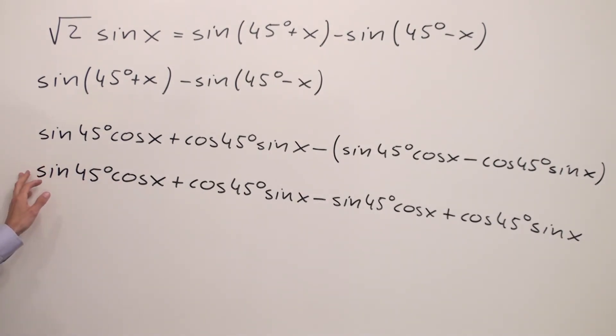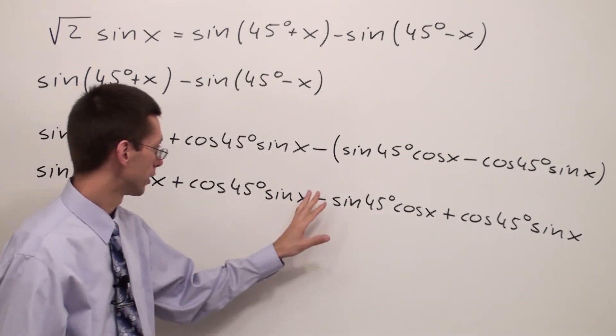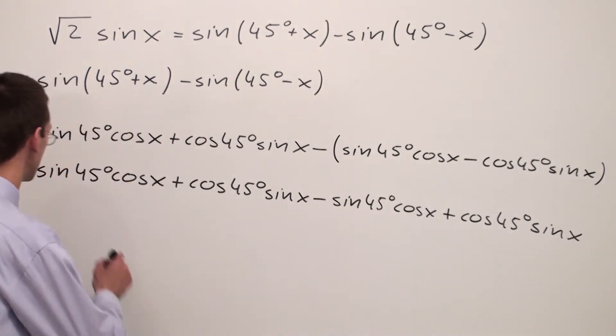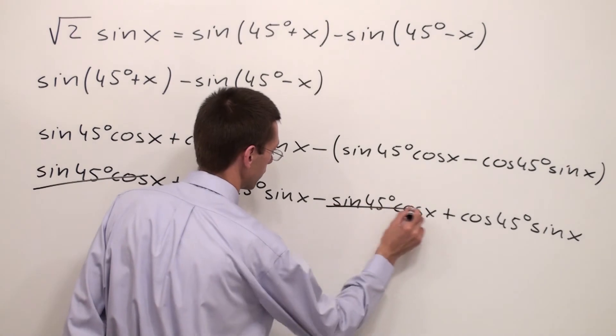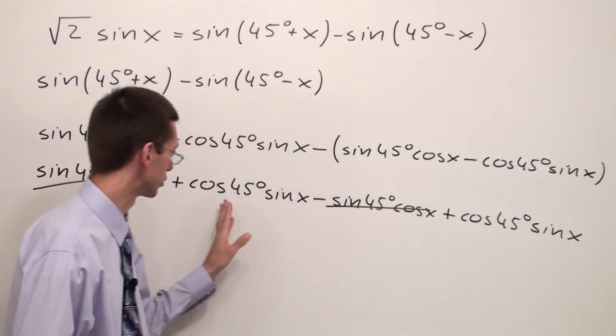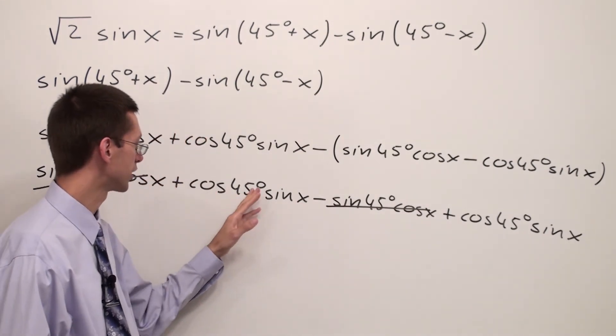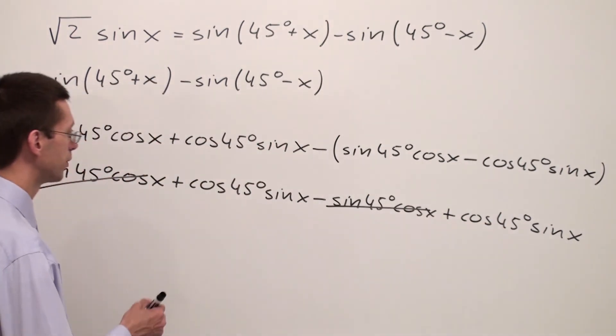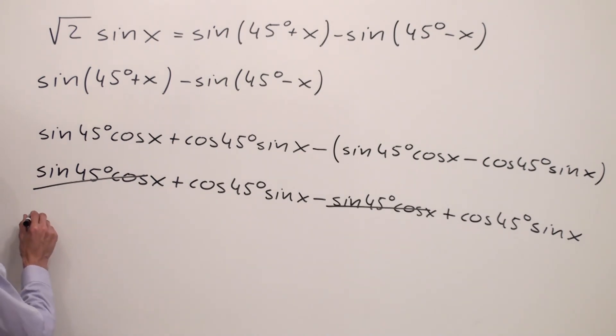With negative, we can combine with negative sine 45° cosine x that are going to subtract each other. I can remove them. Now we're supposed to look at these two expressions. We have cosine 45° sine x and cosine 45° times x. Both of them are identical, so I can write as 2 cosine 45° sine x.